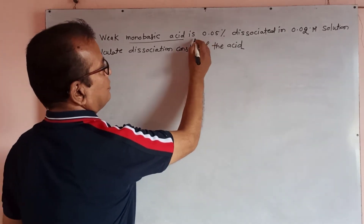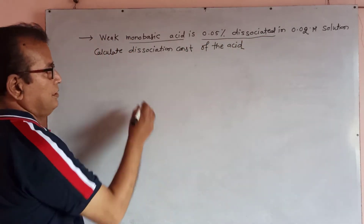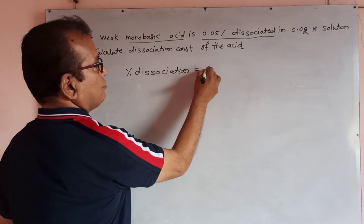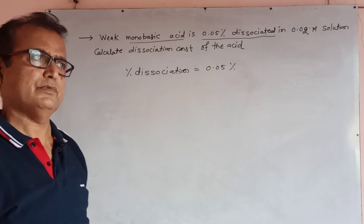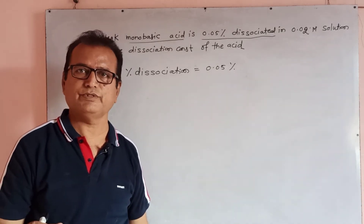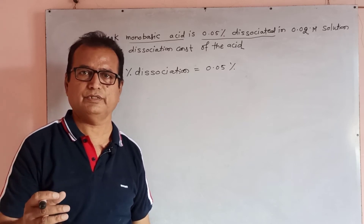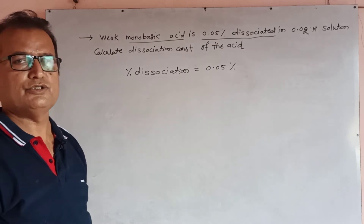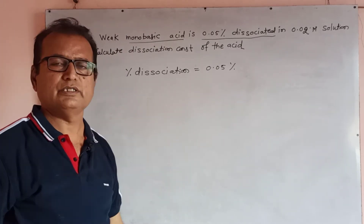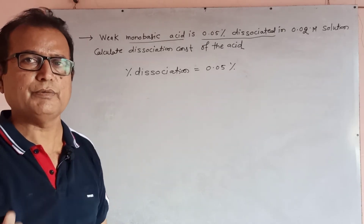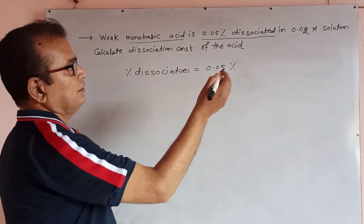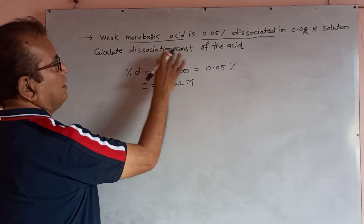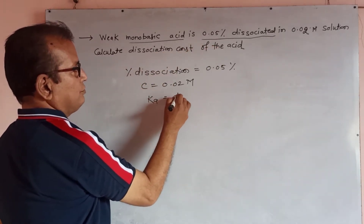The given problem states: this acid is 0.05% dissociated. Percentage dissociation is given, equal to 0.05%. You must write this in the board exam. If you are solving board problems and practicing different types of board problems, it will be easy to solve NEET problems afterwards — there is no real partition between NEET and board problems. Concentration C is equal to 0.02 mol. Calculate the dissociation constant of the acid, Ka.